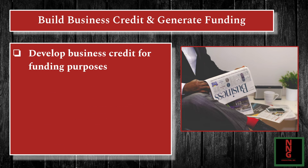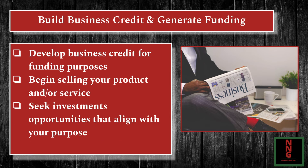Build business credit and generate funding. Developing business credit is very important — you need to be a registered entity with your EIN, phone number, business bank account, business address, and DUNS number in place. You can then use OPM — other people's money — to fund your business. Business credit is very lucrative for startups until you start generating revenue and profit. Once you begin selling your product or service, you can also generate funding to replenish personal assets or savings used to start up, pay expenses, and continue producing products and services that generate profit.